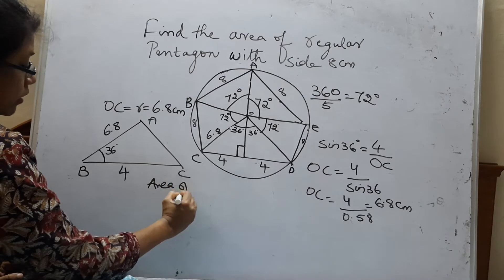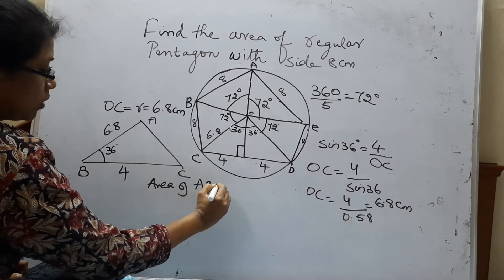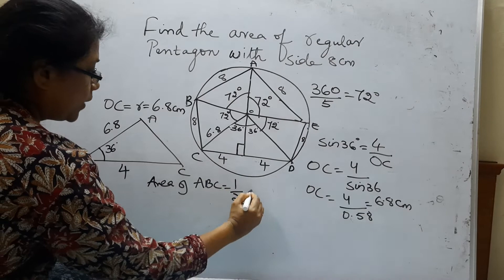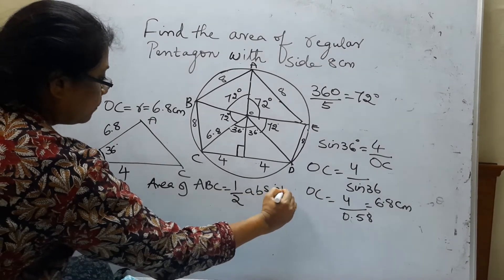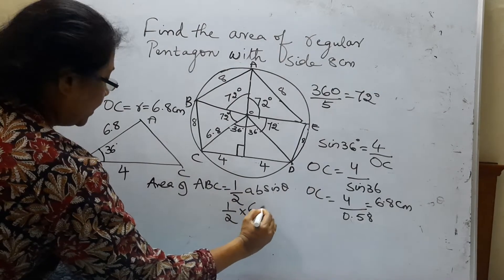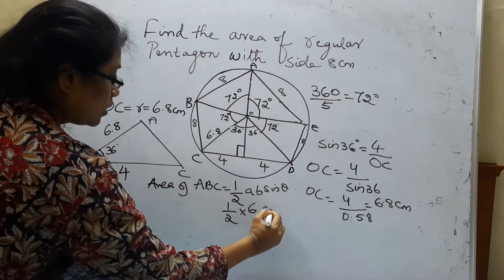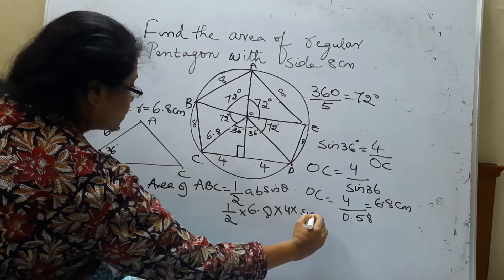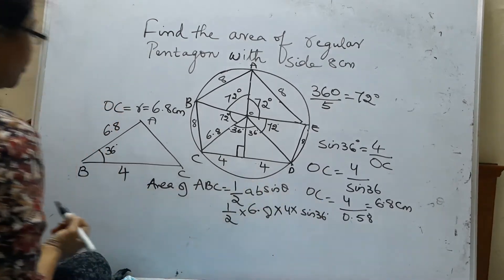You know very well. Area of ABC will be, generally I am saying it is half AB sine theta. That means half, and AB will be 6.8 and 4, into sine 36. This is how you find in trigonometry when the angle is given.